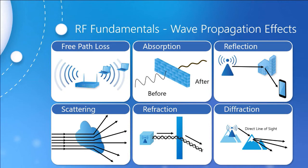Finally, there is diffraction — think of it as a combination of reflection and refraction. This is where the signal bends around an object with no scattering or absorption, but it does cause a longer and different path than originally intended. The most common effect from diffraction is a dead zone around the object causing it. Think of a giant boulder in the middle of a river: water flows around it, but right behind the boulder there's a calm zone — the same concept applies to RF signals.